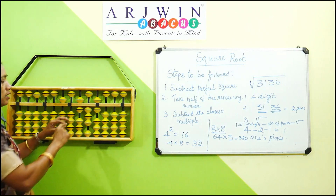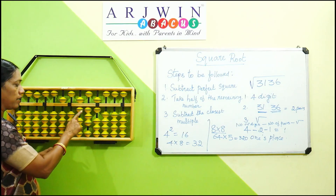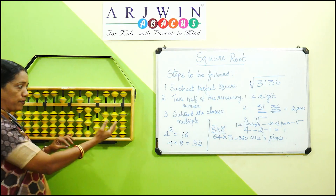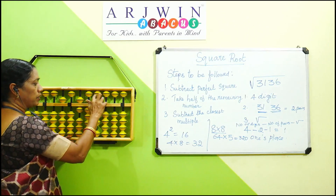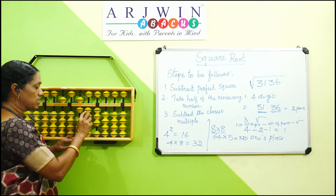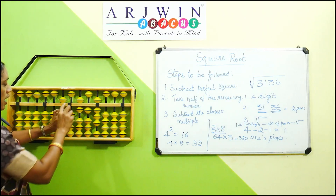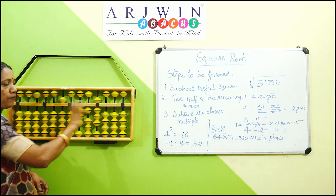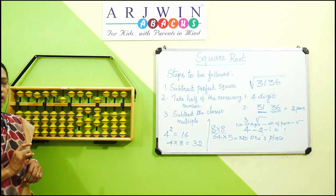Next, second step: half of the remaining number. After step 1 we have 636 remaining. Starting halving from the right side: half of 6 is 3.0, so keep 3 and 0. Half of 3 is 1.5. Half of 6 again is 3.0. After halving, we have 318 on the abacus. Second step is completed.